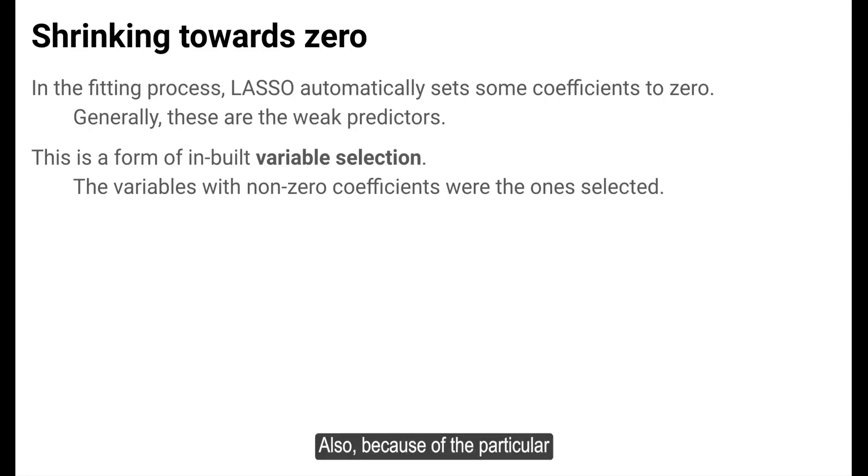Also, because of the particular form of the penalty term being a sum of absolute values, LASSO is able to exactly set some coefficients to zero. This is a form of built-in variable selection.